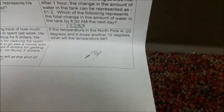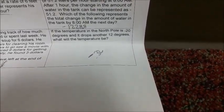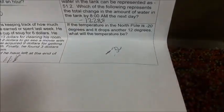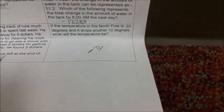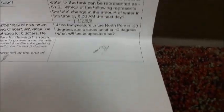Okay, so now we're going to be doing this problem right here. If the temperature in the North Pole is negative 20 degrees and it drops another 12 degrees, what will the temperature be? So right here I have a number line. You'll start at zero, and then you go over here. This will be the starting point: -20.